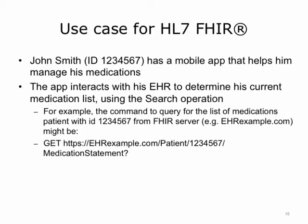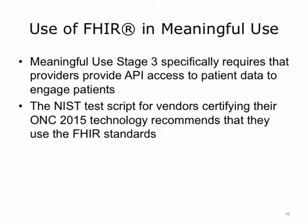Let's consider the medication management mobile app scenario again. John Smith is a patient who uses this app to manage his medications. The app interacts with his doctor's EHR to determine his current medication list. His ID number is 1234567. The EHR publishes an API for developers following the FHIR standard, and the mobile app would issue a FHIR API call to get all the medication statement resources for the patient with ID 1234567. Meaningful Use Stage 3 specifically requires that providers offer API access to patient data. The NIST test script for vendors certifying their ONC 2015 technology recommends using the FHIR standard.